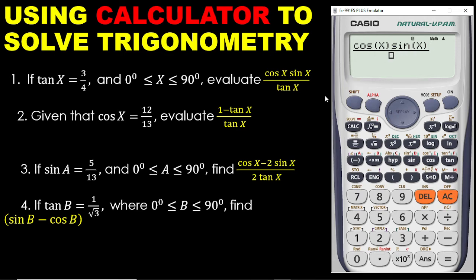Then divided by tan X. I need to move the cursor down by clicking the down arrow key. Then I enter tan X: click on tan, press alpha, then X, and close the bracket. You can see that I have exactly this expression on the calculator. Now to get the answer, simply press equal to. You are getting it.